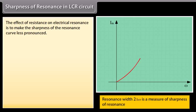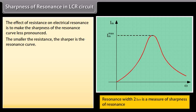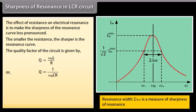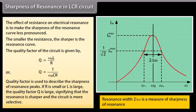Sharpness of resonance in LCR circuit: The smaller the resistance, the sharper the resonance curve. The quality factor Q of the circuit is given by Q = ω₀L / R, or Q = 1 / (ω₀CR). Quality factor is used to describe the sharpness of resonance peaks. If R is small or L is large, the quality factor Q is large, signifying that the resonance is sharper and the circuit is more selective.